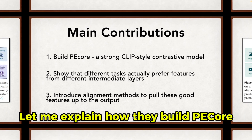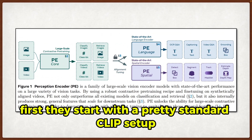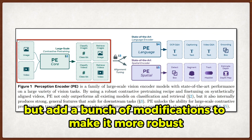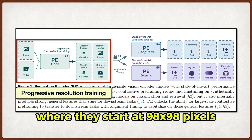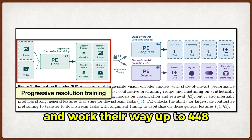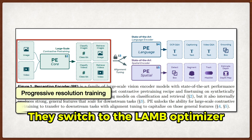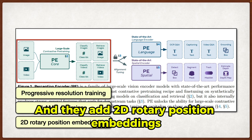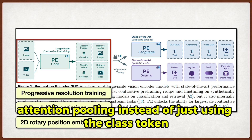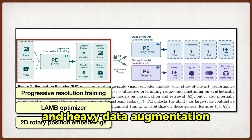Let me explain how they build PeCore first. They start with a pretty standard CLIP setup, but add a bunch of modifications to make it more robust. They use progressive resolution training, where they start at 98x98 pixels and work their way up to 448. They switch to the LAM optimizer, which lets them use a much higher learning rate, and they add 2D rotary position embeddings, attention pooling instead of just using the class token, and heavy data augmentation.